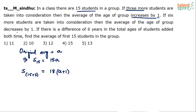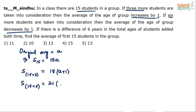When you take 3 more students the average increases by 1, but if you take 6 more students into consideration then the average decreases by 1. So the group now has 15 plus 6 — that's 21 students. The average decreases by 1, so the new average is a minus 1. The sum of this group is 21 times (a minus 1).